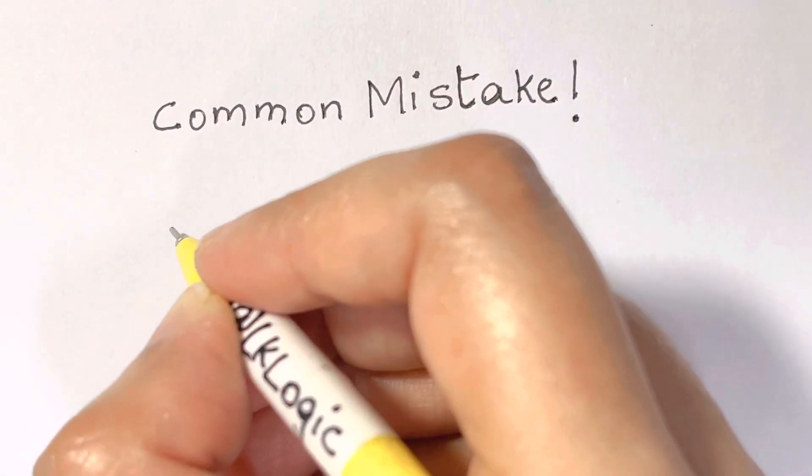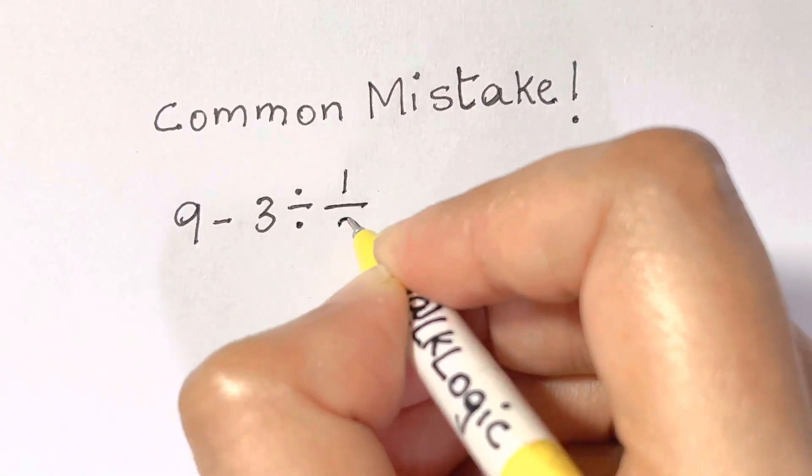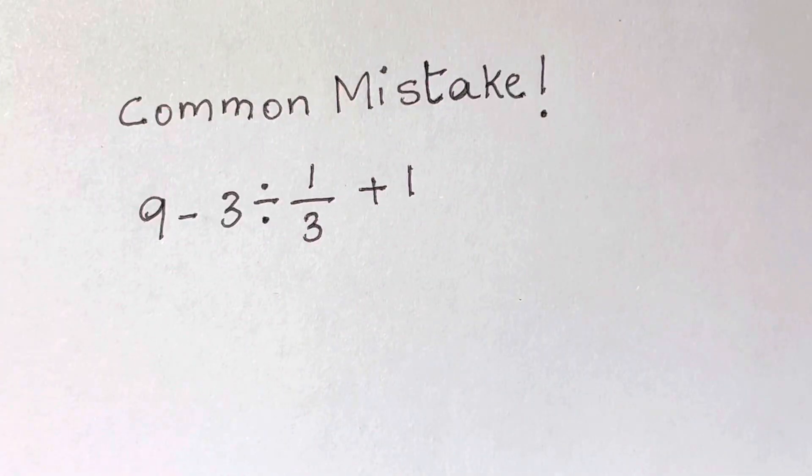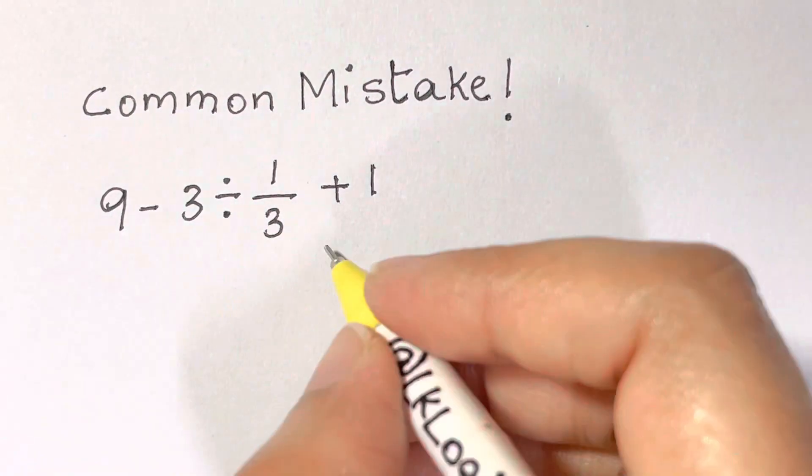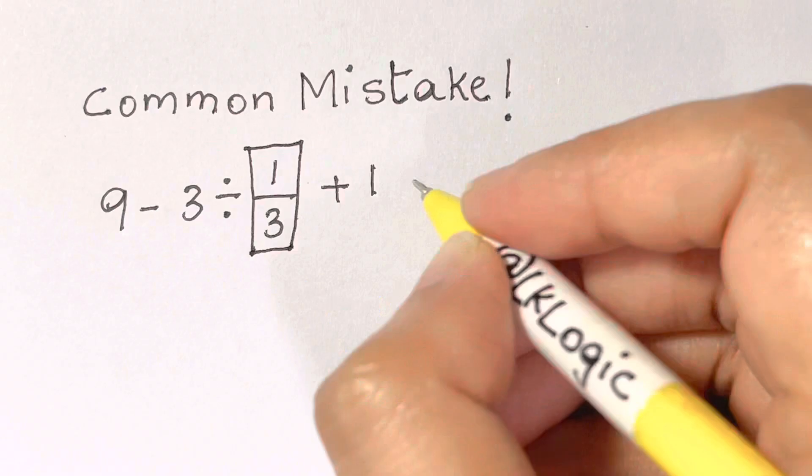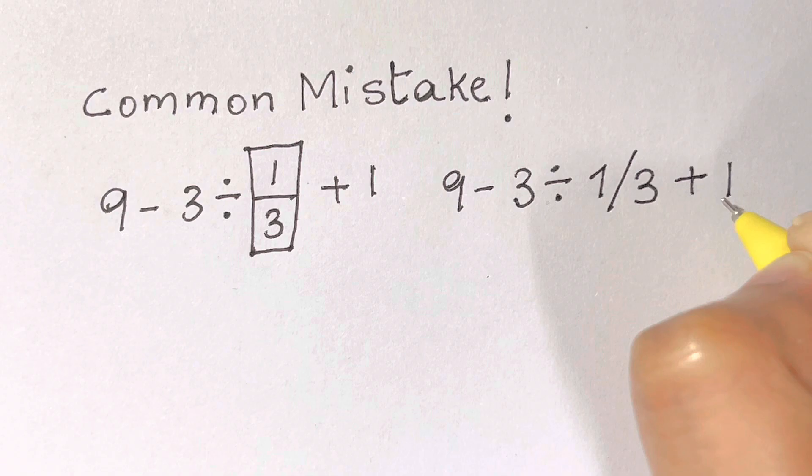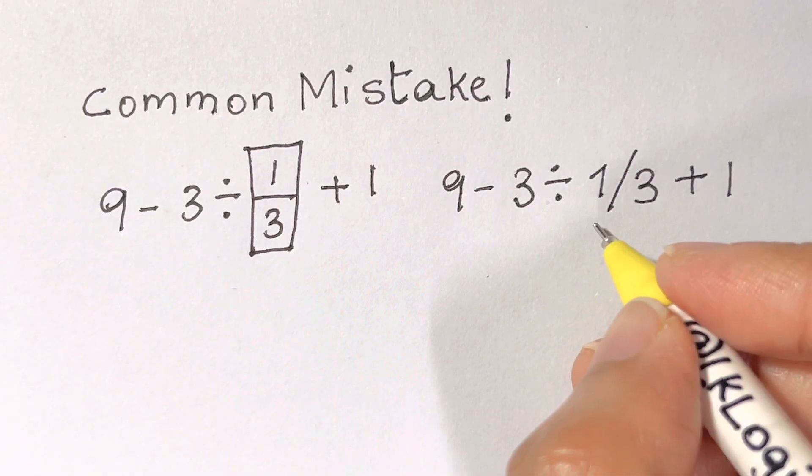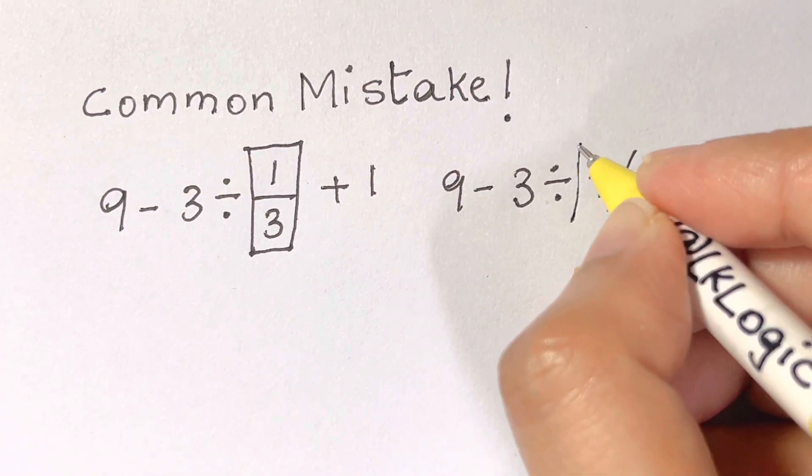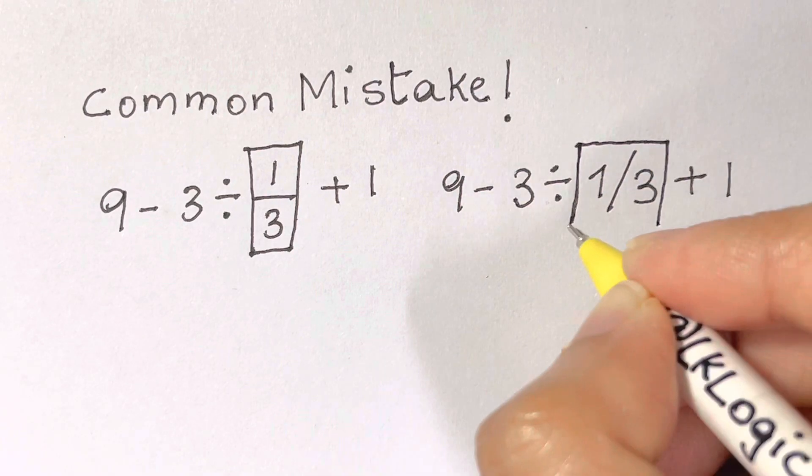To get started, I'm going to go over a common mistake. Many people will input this expression into Google or into a calculator. In order to do so, you have to convert the fraction 1/3 into an inline expression. Many people write the equation in the following form: now you would interpret that 1/3 is being grouped together.